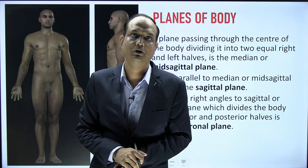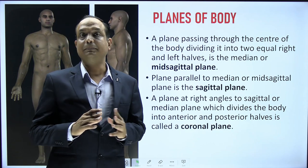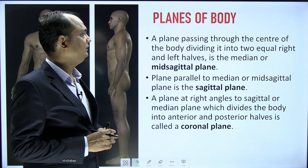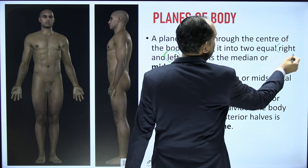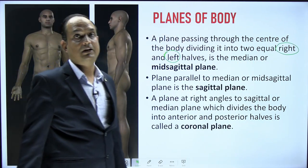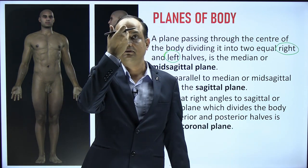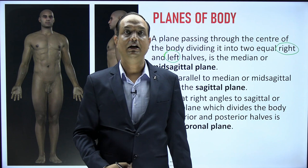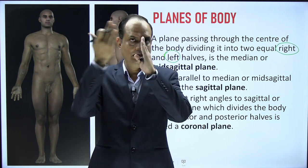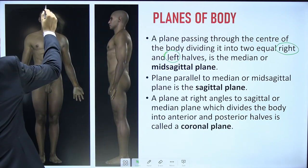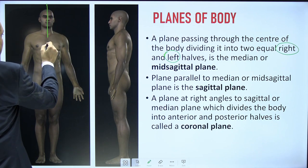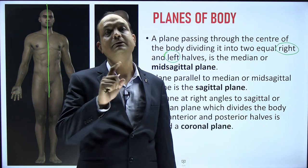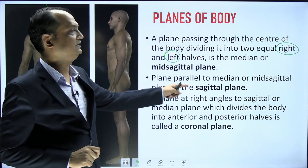Now the planes of the body. The first is the mid-sagittal plane: a plane passing through the center of the body dividing it into two equal right and left halves. This plane passes along the tip of the nose, the midpoint of the sternum, and through the navel, dividing the body equally into right and left halves.